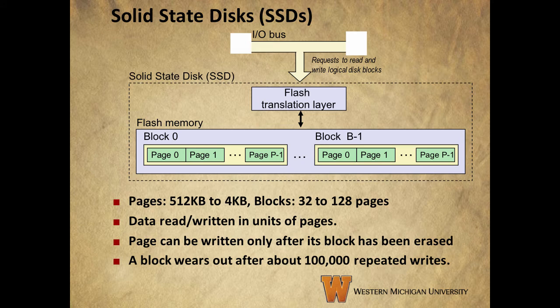On to solid-state disks. Solid-state disks consist of flash memory arranged into blocks which contain the pages that data actually gets written to. Each block contains 32 to 128 pages, each of which can contain 512 bytes to 4 kilobytes of data. Newer and larger SSDs now have page sizes of 2, 4, 8, or 16 kilobytes and blocks containing 128 or 256 pages. A page can be written to only after the block containing it has been completely erased, and the block will wear out after about 100,000 repeated writes, so SSDs will wear out over time.